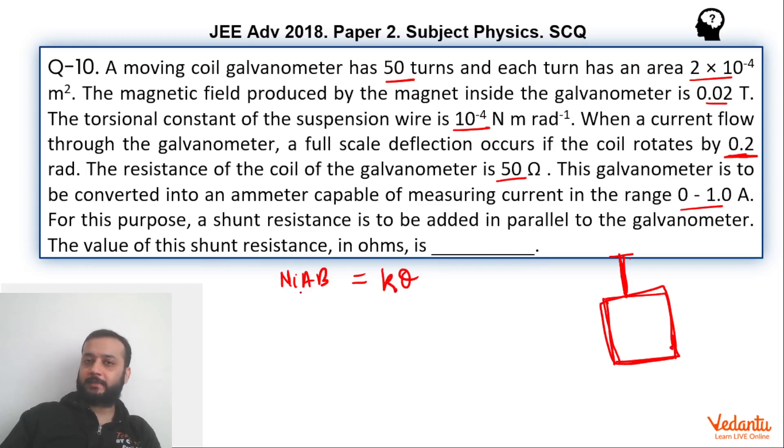When theta is maximum, we can say that current will also be maximum. By theta maximum, I mean to say maximum deflection under equilibrium. That means steady state has been achieved. There is no damping, there are no oscillations.